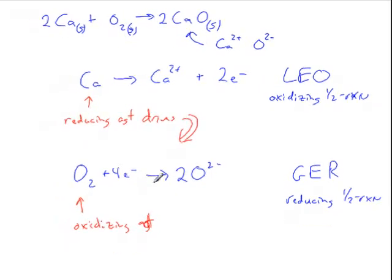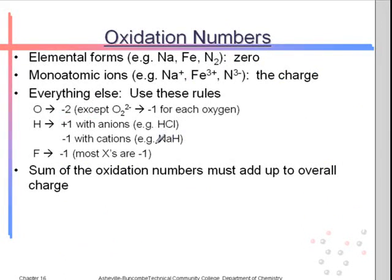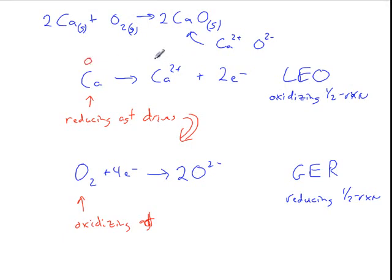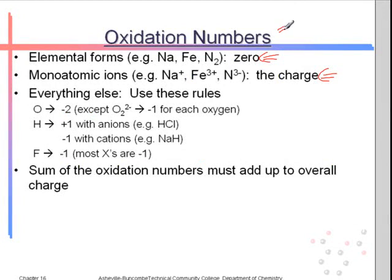Another perspective is the introduction of oxidation numbers — this is just a review. For this example, we need to know two rules: in elemental form, the oxidation number is zero; if it's a monoatomic ion, it's just the charge. Applying that here: calcium is zero, calcium ion is plus two, oxygen is zero, and oxide is minus two. I'm not factoring in the molar coefficient — I'm just looking at the oxidation number for a single oxygen atom in oxide. The purpose of oxidation numbers is to keep track of the electron flow during a redox reaction.